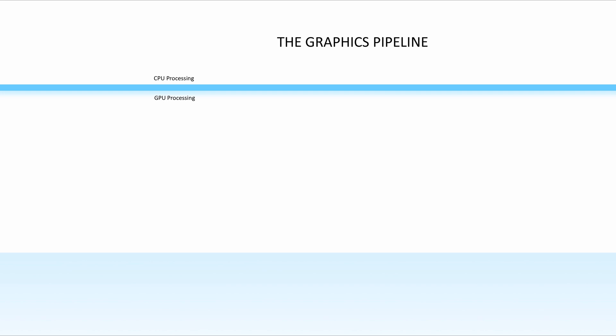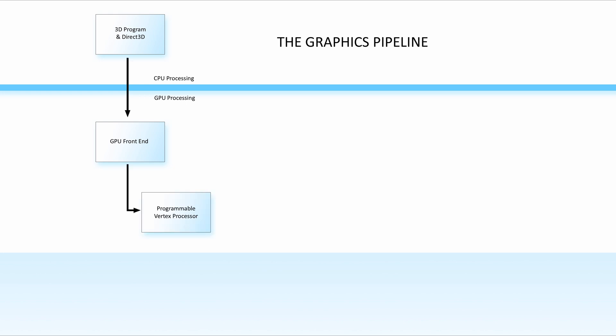Here we have the diagram of the graphics pipeline. The data starts out on the CPU, where your 3D program — Unity, Unreal, Maya, or a game — passes vertex data through DirectX or OpenGL to the graphics driver. The driver then sends the data to the GPU's front end, which is the part of the graphics chip designed for communicating with the CPU. The data then gets sent to the programmable vertex processor, and this is the part of the graphics chip where your vertex shader runs.